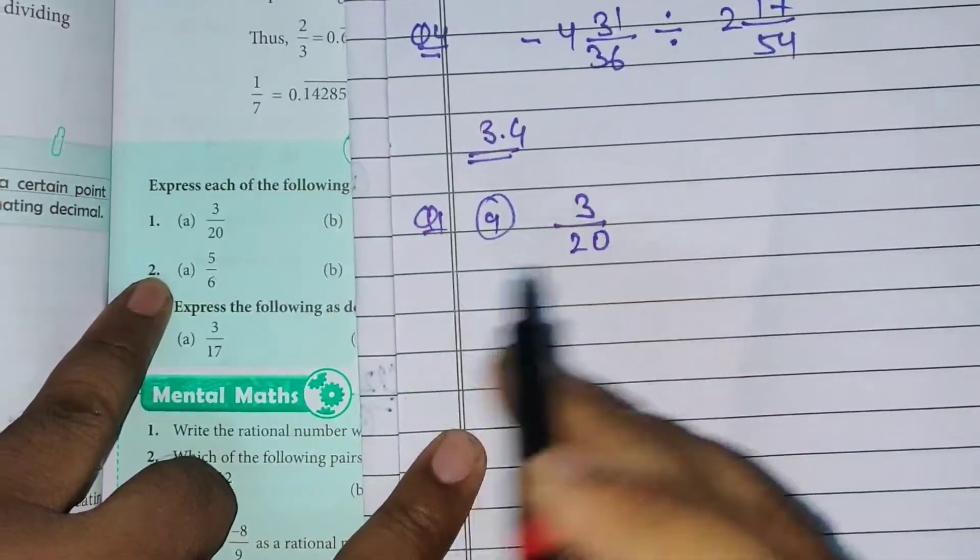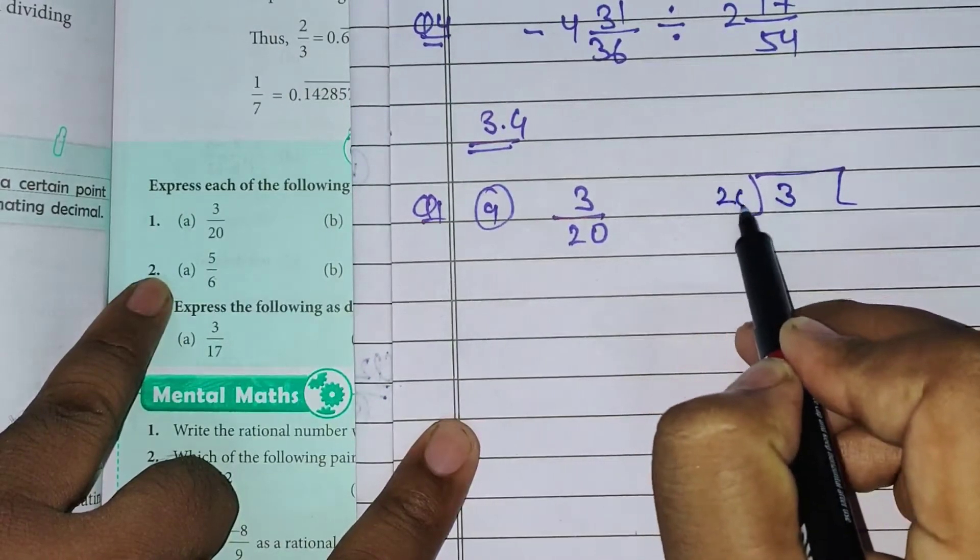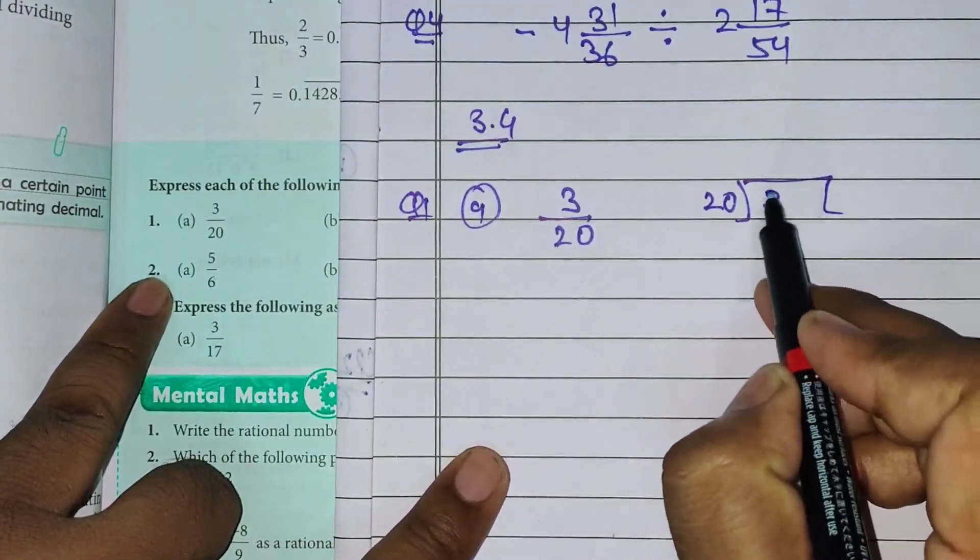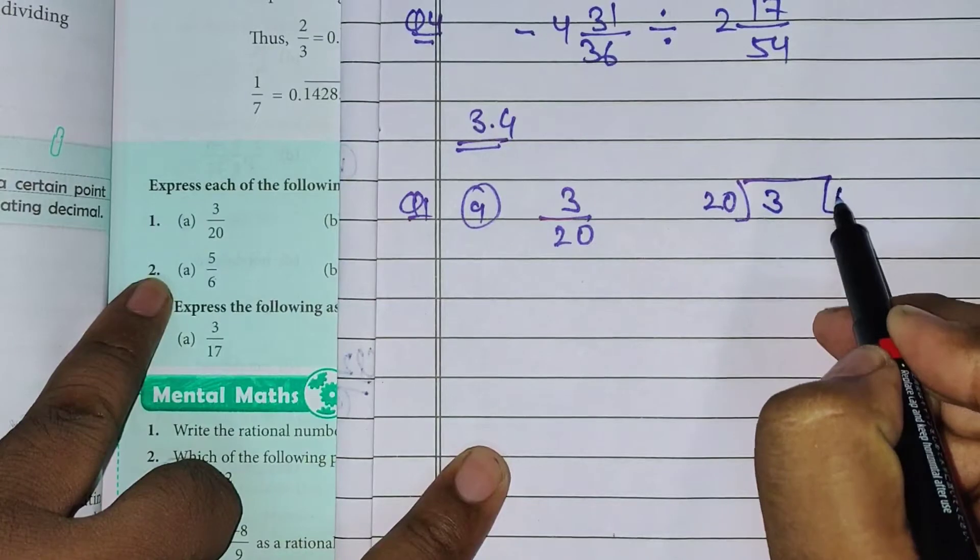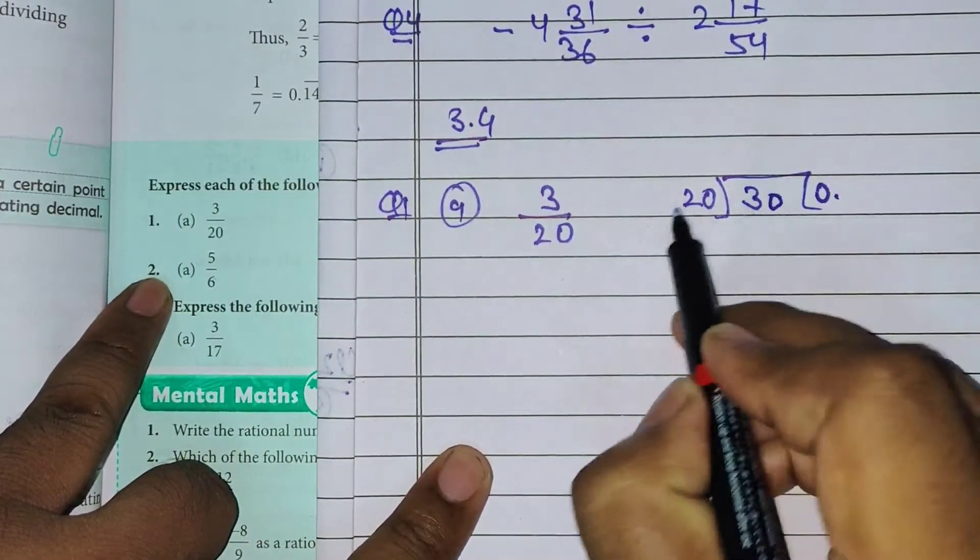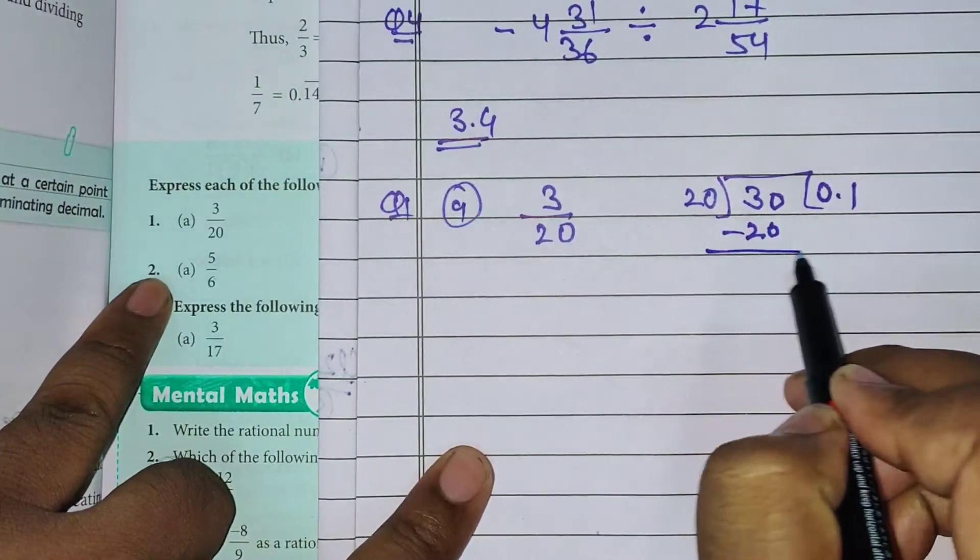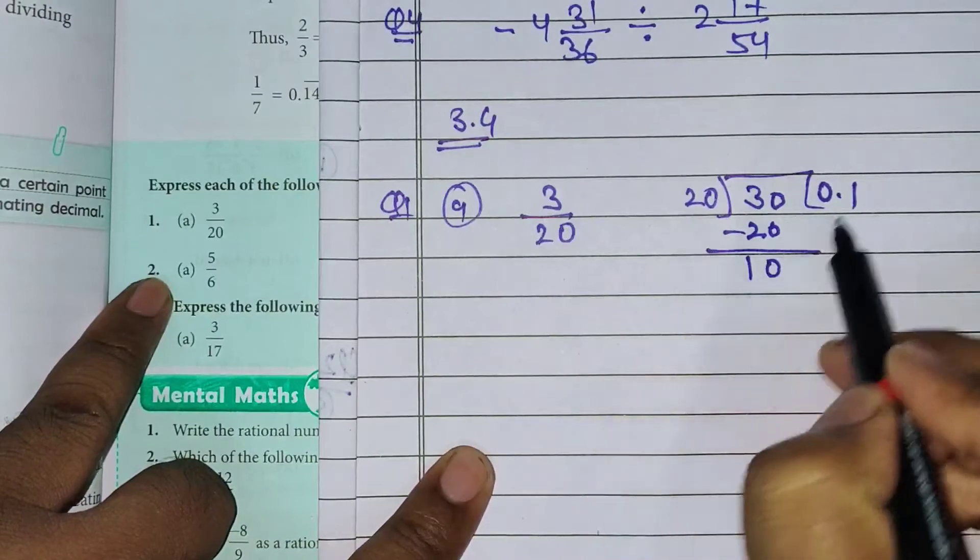Bachos is ko hamein decimal me karne ke liye kya karenge, 3 ko divide kar denghe 20 se. Now you can see 3 is chota hai, so yahaan 0 aayega. Then decimal, then 0. So 20 wunja 30. 20 vunja 30 remainder kitna aay hai bachos? 10. Phir bhi yaha chota hai.